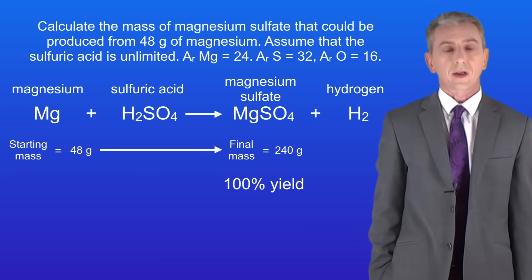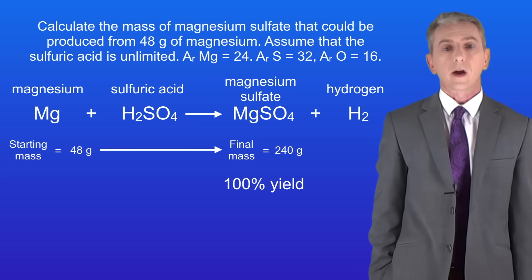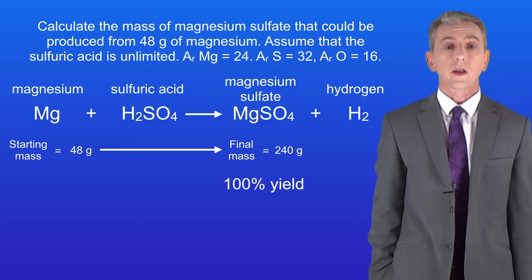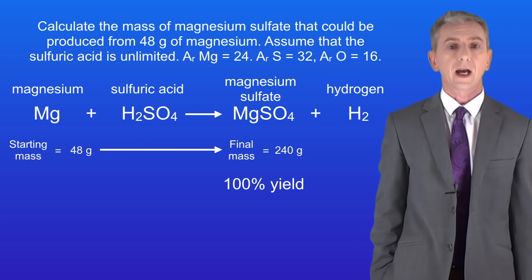So what we know is that starting with 48 grams of magnesium we could make a maximum of 240 grams of the product magnesium sulfate. Scientists call this 100% yield. For that to happen every single atom of magnesium must react to form the product magnesium sulfate.